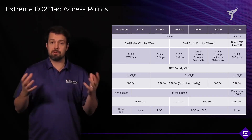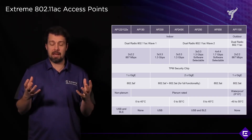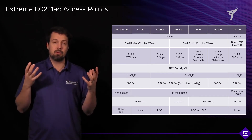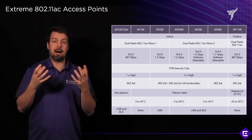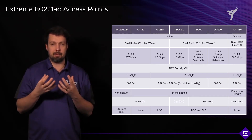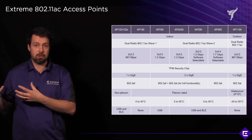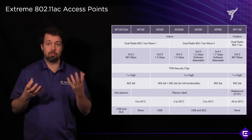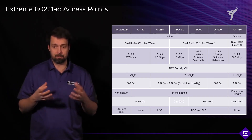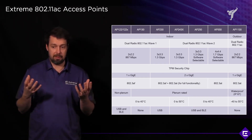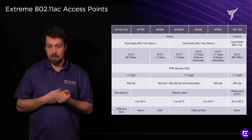So there's no reason why you would have a higher radio chain ratio than 2x2. That's why we have a 2x2 radio in the AP1130.